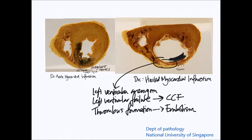Here you can appreciate the differences between acute myocardial infarction, seen on the left as a mottled area of discoloration, compared to healed myocardial infarction, which presents as an area of thinning as well as grossly appreciable fibrous tissue or fibrosis.